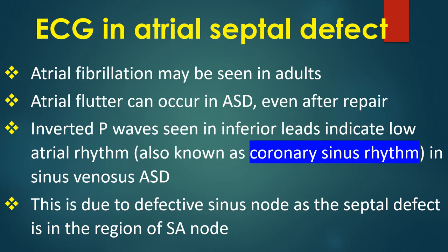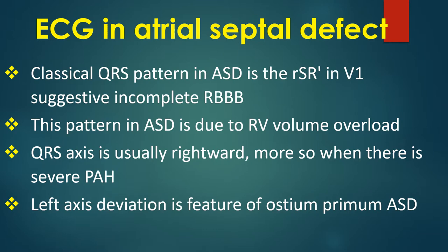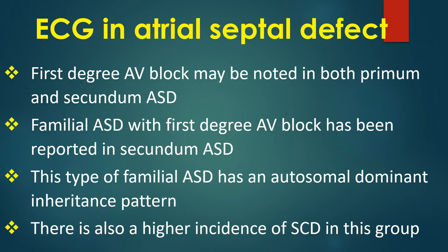Atrial fibrillation may be seen in adults; atrial flutter can occur in ASD even after repair. Inverted P waves in inferior leads indicate low atrial rhythm, also known as coronary sinus rhythm, in sinus venosus ASD — due to a defective sinus node as the septal defect is in the region of the sinoatrial node. The classical QRS pattern in ASD is RSR' in V1, suggestive of incomplete right bundle branch block, due to right ventricular volume overload. QRS axis is usually rightward, more so with severe pulmonary hypertension. Left axis deviation is usually a feature of ostium primum ASD. First degree AV block may be noted in both primum and secundum ASD. Familial ASD with first degree AV block in secundum ASD follows an autosomal dominant inheritance pattern, with a higher incidence of sudden cardiac death in this group.